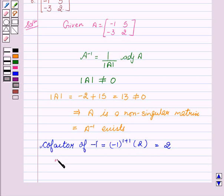Now cofactor of 5 equal to (-1)^(1+2) into -3 which is equal to 3.